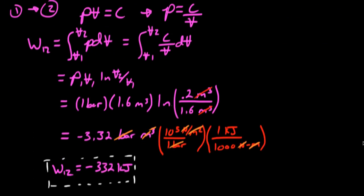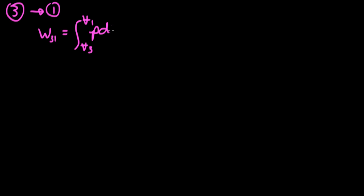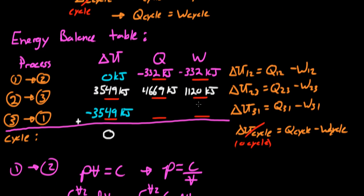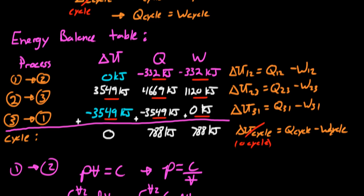Finally, we compute the work from 3 to 1 using the integral of PdV from V3 to V1. This is the easiest one because the volume doesn't change — V3 equals V1 — so the work from 3 to 1 is zero. Substituting back into our table, the heat from 3 to 1 is minus 3549 kilojoules. Adding up the columns, we get a net heat and net work of 788 kilojoules for both, which checks out with our energy balance that says 0 equals Q minus W for the cycle.